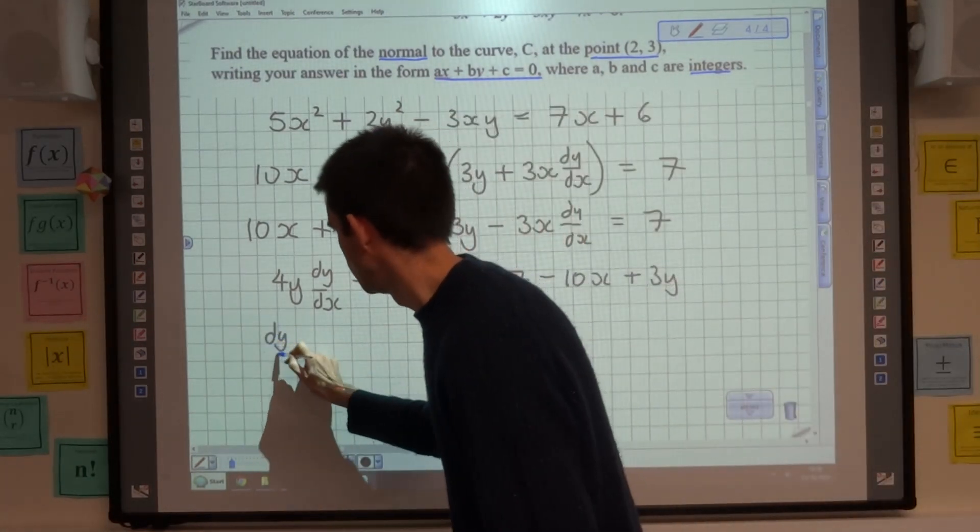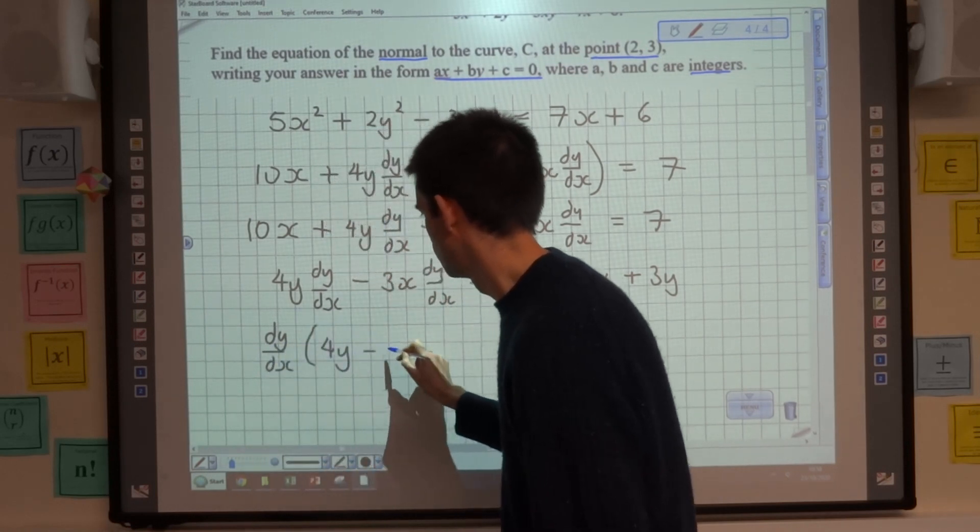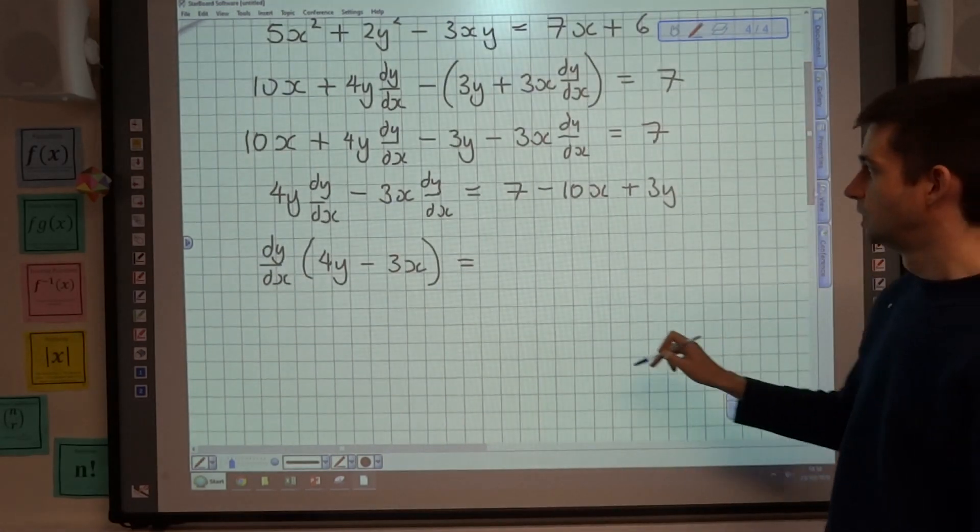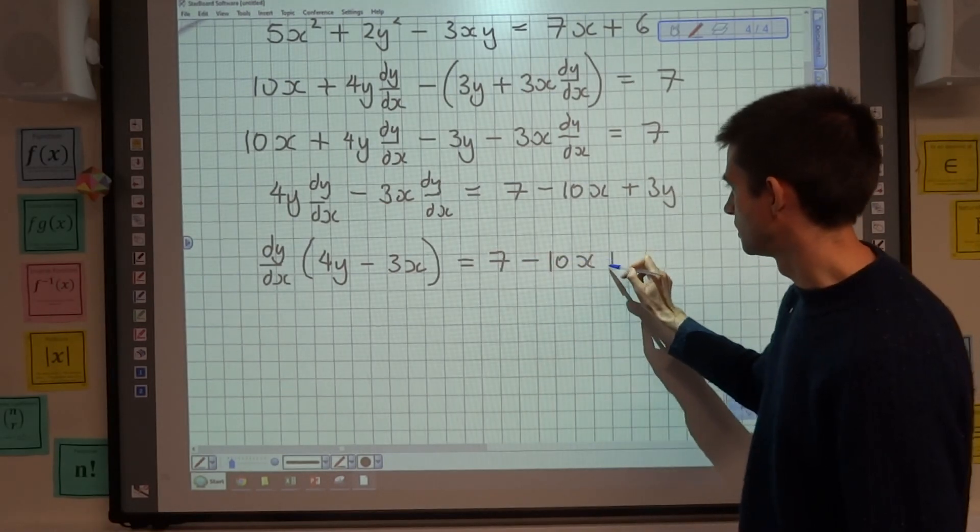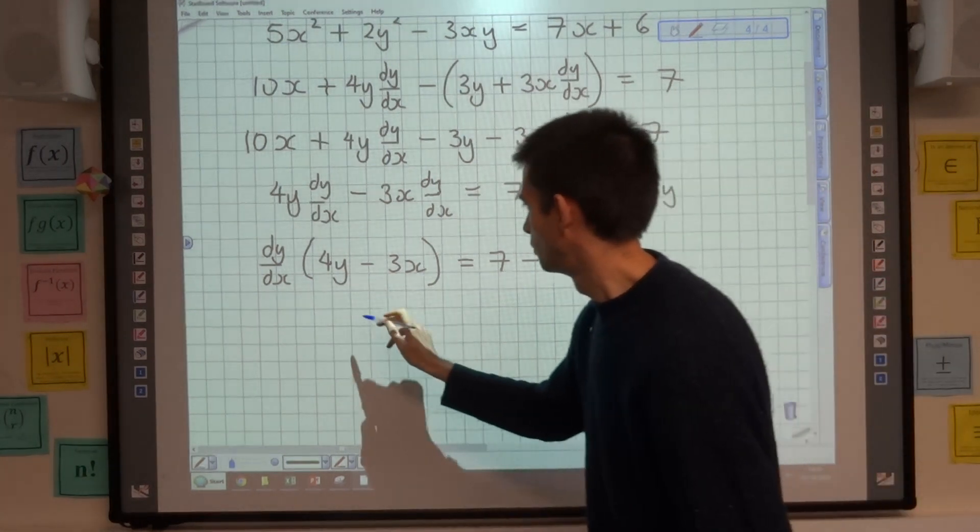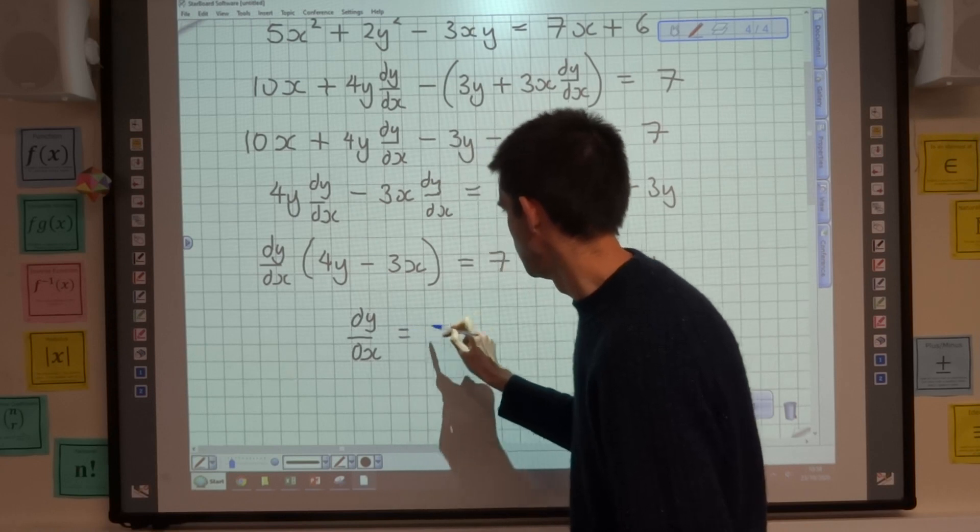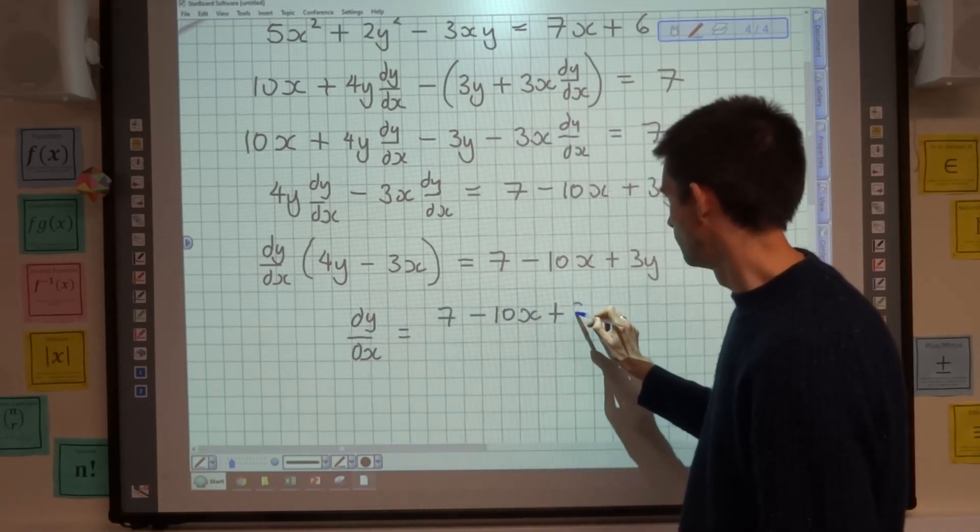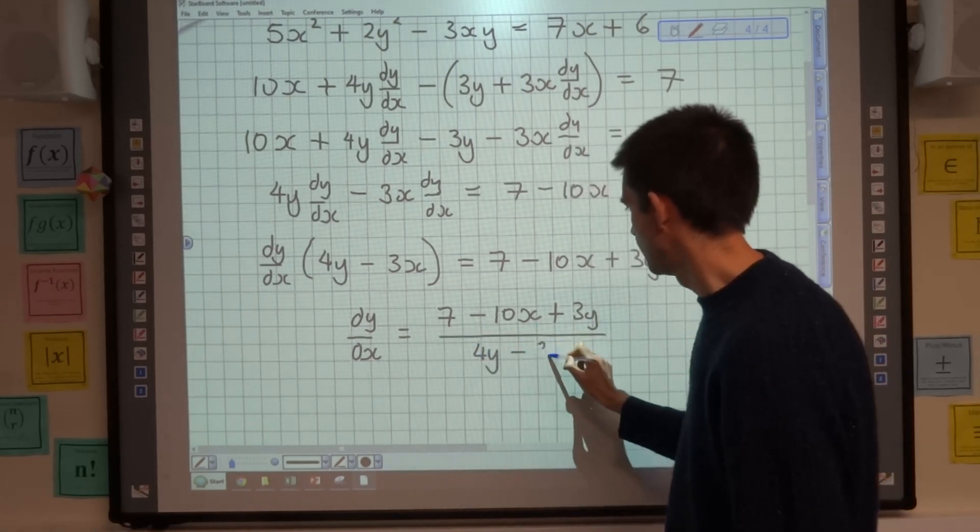Leaving the dy/dx terms on the left-hand side, I've got 4y dy/dx - 3x dy/dx = 7 - 10x + 3y. Factorising out that dy/dx term on the left-hand side, it's going to give me, in my bracket, 4y - 3x. And the right-hand side remains unchanged, 7 - 10x + 3y. Then dividing through by that bracket, I get my expression for dy/dx to be (7 - 10x + 3y)/(4y - 3x).